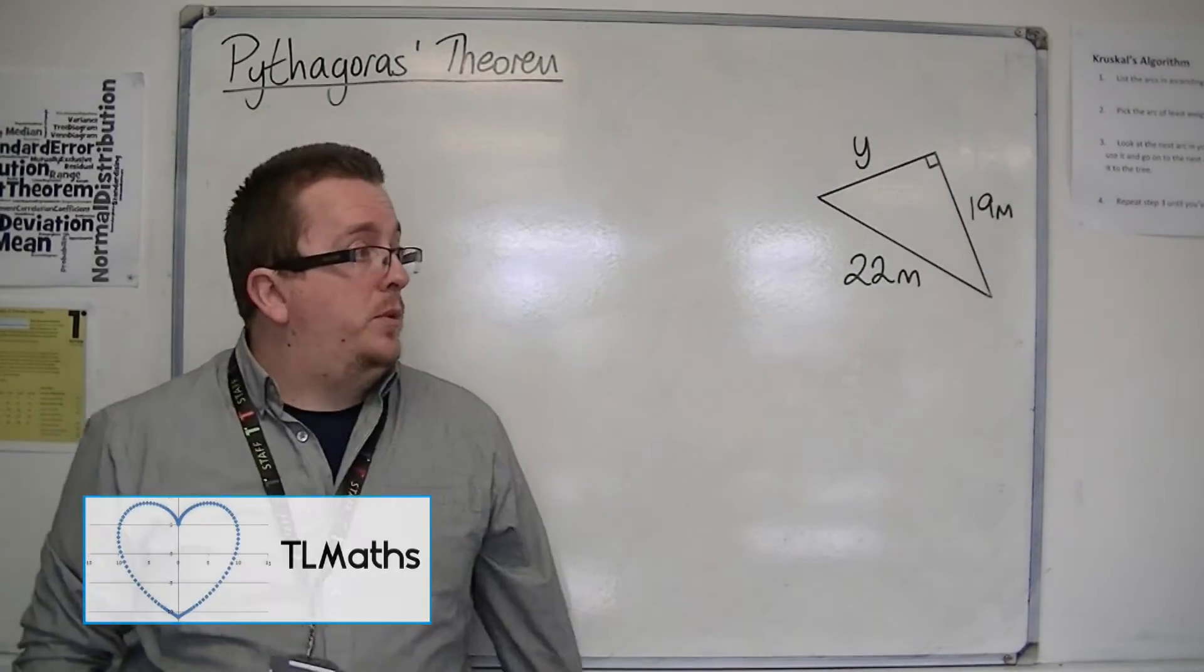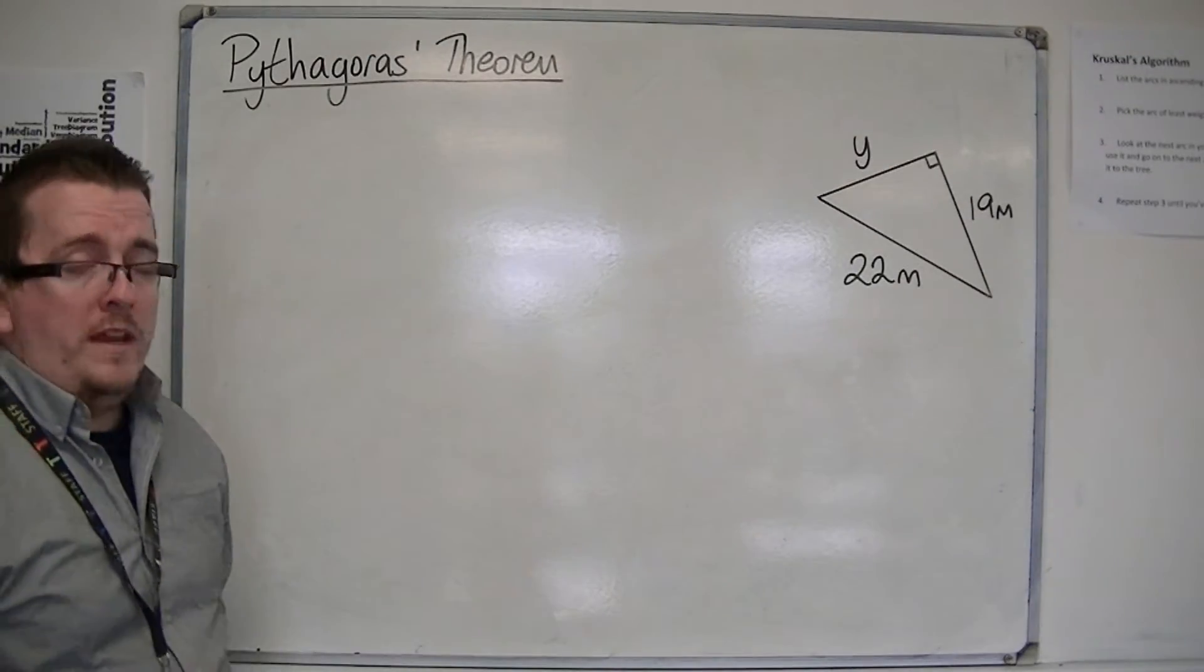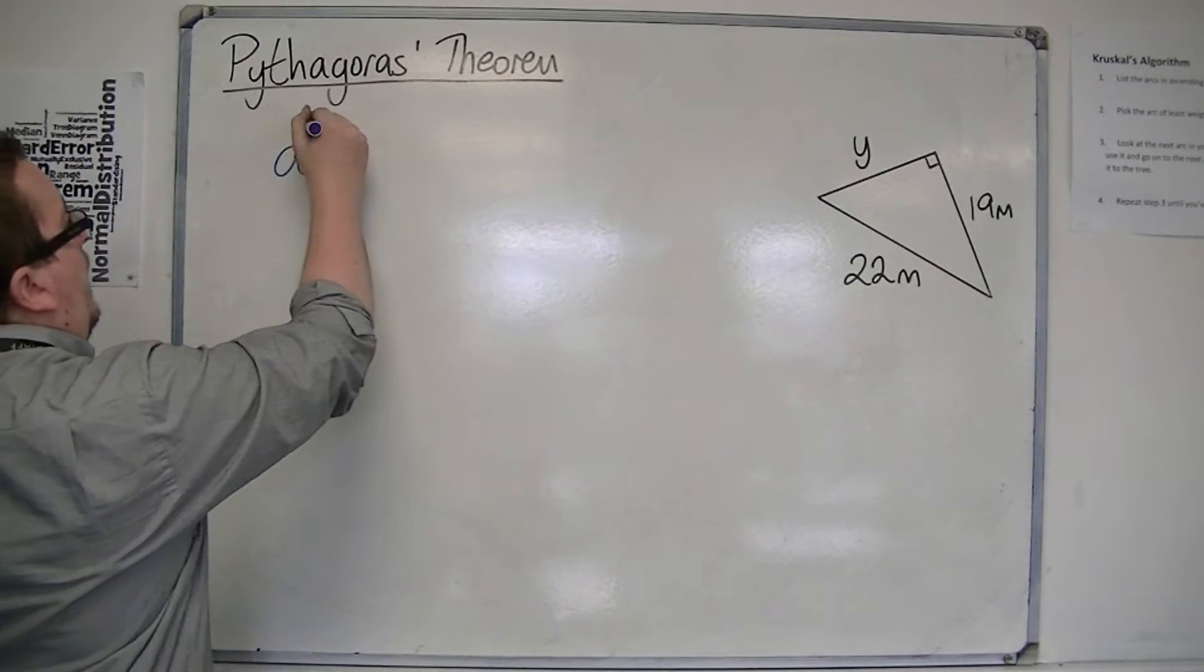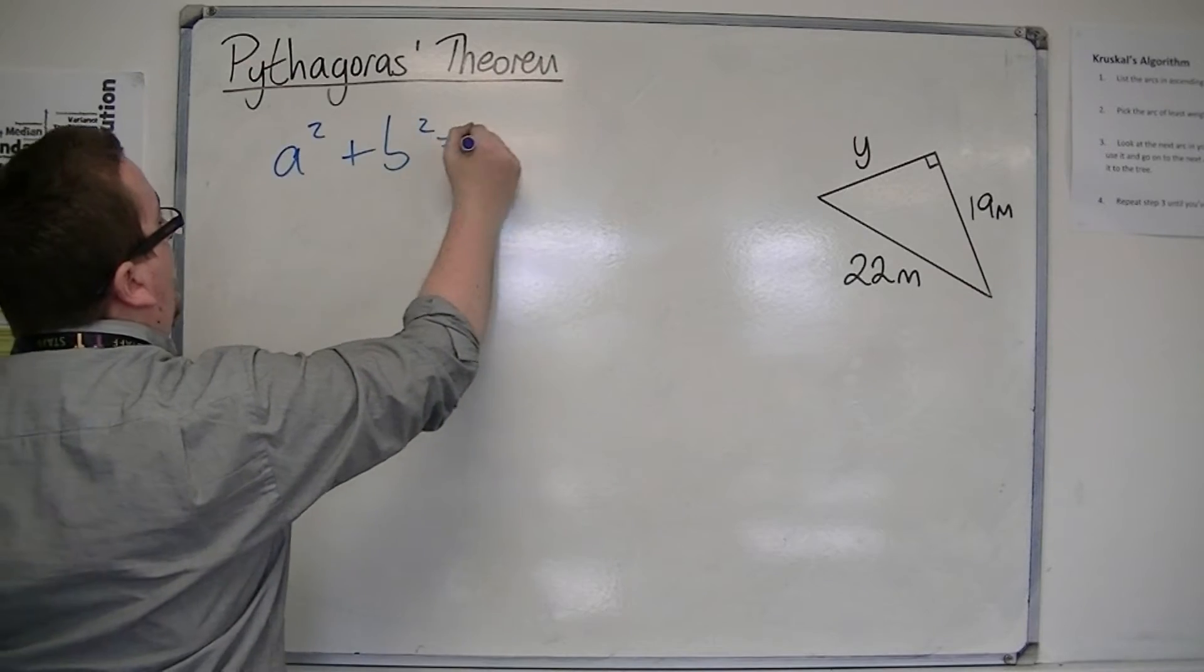So in this final example, we have a right-angled triangle again, so it's got to be Pythagoras' theorem to find the length of one of the missing sides. So a squared plus b squared equals c squared.